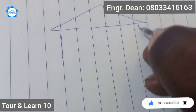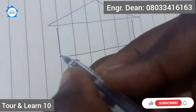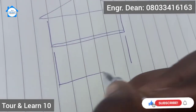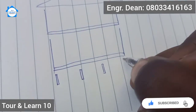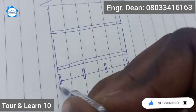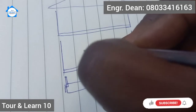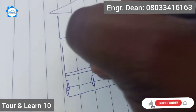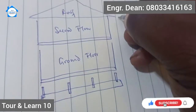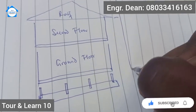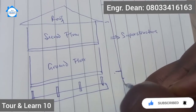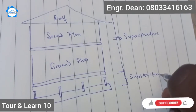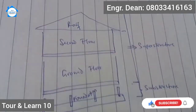I'm going to be talking about everything you need to know about raft foundation. In building construction, we have two main parts: we have the substructure and we also have the superstructure. The substructure is the foundation that is below the ground level, while the superstructure is above the ground level. Which means if you have the ground level, the one below is the substructure and the one above is the superstructure.